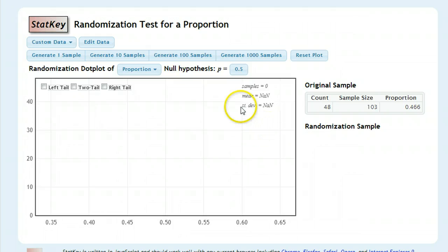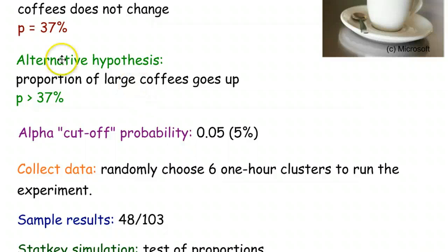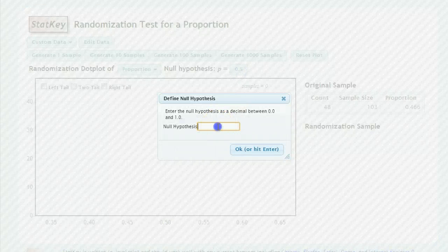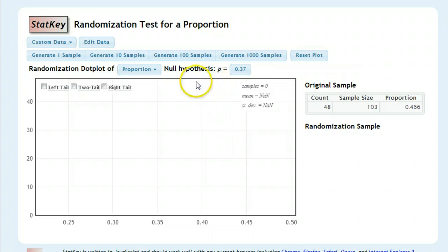The next thing we need to do, we can't just start generating right away like we can with confidence intervals. We have to determine what our null hypothesis is going to be. In this case, it starts out with the default 0.5. We're going to change that to P equals 0.37, the 37%. So P equals 0.37.